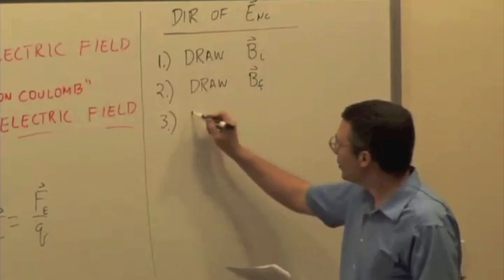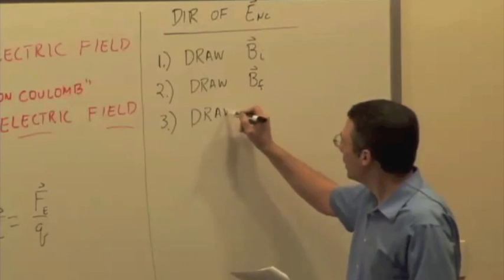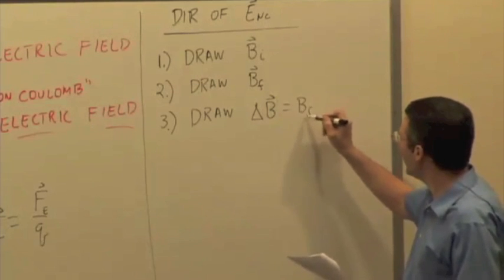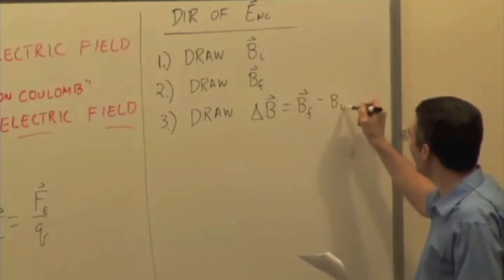Step three is draw the change in magnetic field, delta B, which is B final minus B initial.